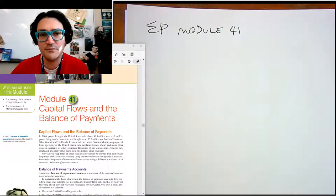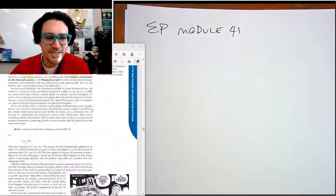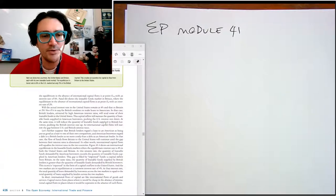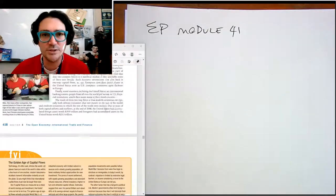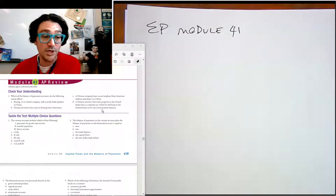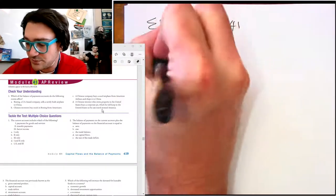So module 41 is capital flows and the balance of payments. And like I said, it's a little bit trickier than maybe what we're used to. So it's a good idea to just check it out. So let's get started here, though. Let's assume you've done that.